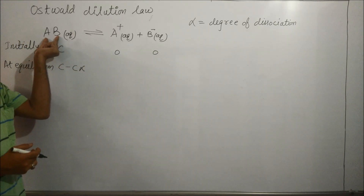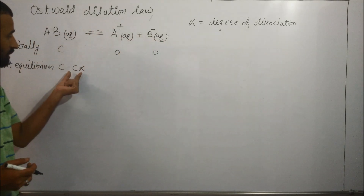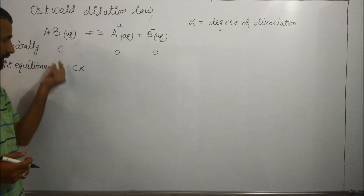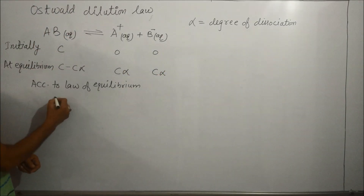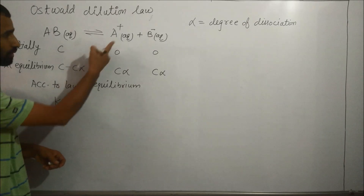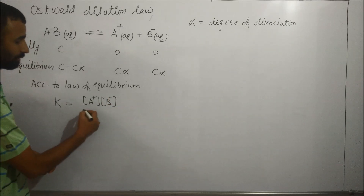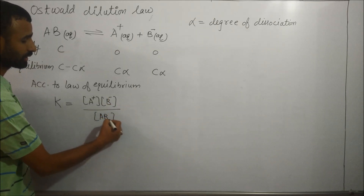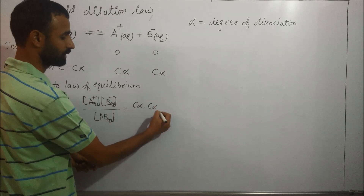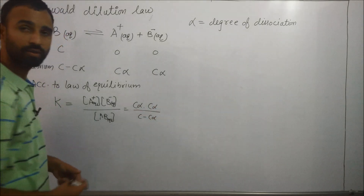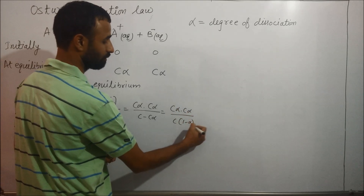If one AB dissociates, we get one A plus and one B negative. So if C alpha dissociates, we get C alpha of A plus and C alpha of B negative. According to the law of equilibrium, equilibrium constant K equals concentration of A plus times concentration of B negative divided by concentration of AB, which gives C alpha times C alpha divided by C minus C alpha, or C alpha squared divided by C times one minus alpha.